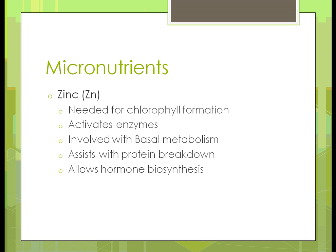Next is zinc. It's also needed for the formation of chlorophyll and activates enzymes. It's involved with basal metabolism — the lower level of metabolism within the plant. It assists with breaking down protein, helping when converting starches into sugars. And it's also what allows for hormone biosynthesis — in other words, it's what allows fruits to form.